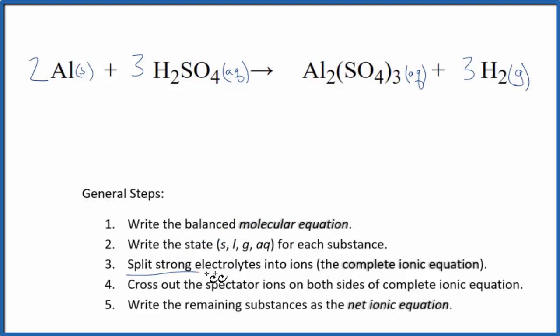Now, we can split the strong electrolytes into their ions, and that's going to give us the complete ionic equation. So for aluminum, that's just aluminum metal, so we're just going to write 2Al. I won't write the states right now. We can do that later. Plus, the sulfuric acid, we said that's a strong electrolyte. That's aqueous, so we need to split this apart.